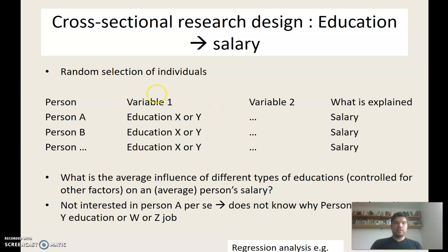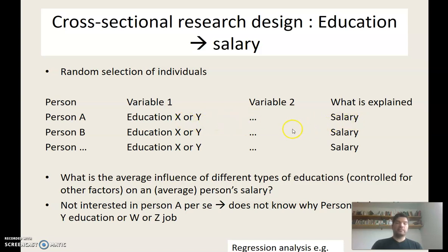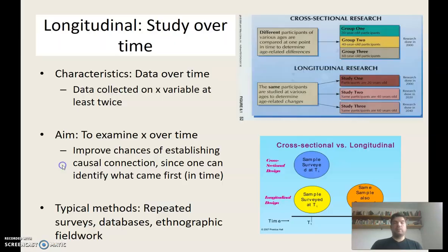Another way to illustrate this: think of an Excel sheet. You have individuals in rows — their education, gender, age, and many other variables — and you want to correlate and explain salary. Through statistical analysis, you can find out how these things are related on average. That also shows how a cross-sectional design works: you have sections of data you want to compare across, all collected at one point in time.